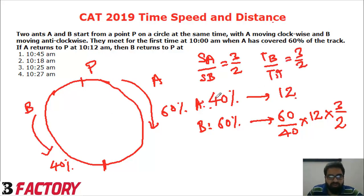If A is covering 40% as 12, A will cover 60% distance in 60 by 40 into 12. But B, since speed of B is lesser than A,